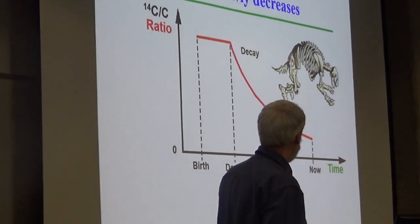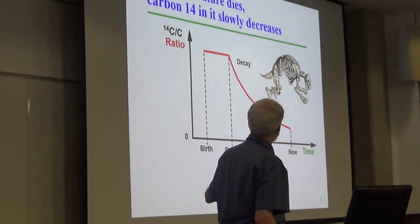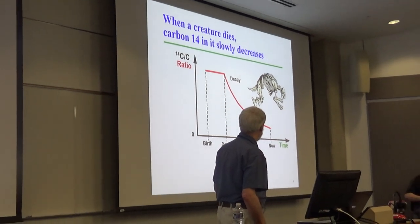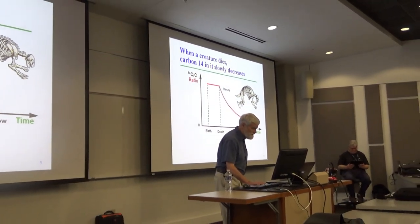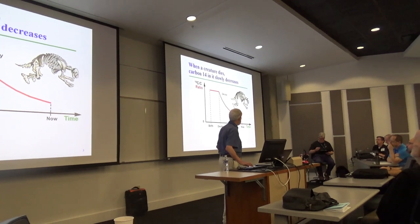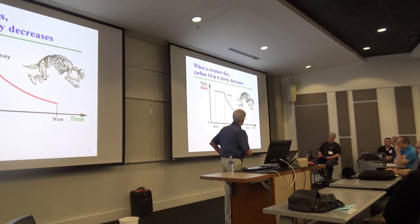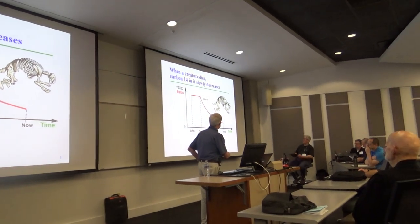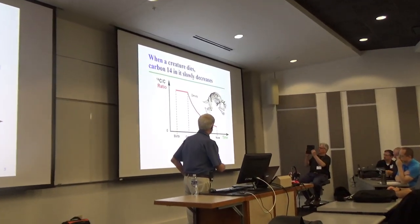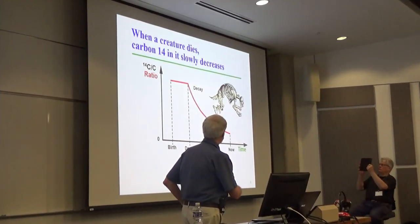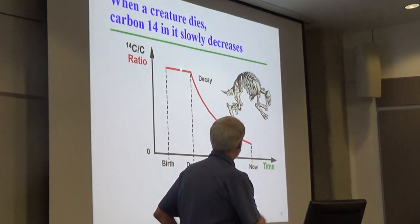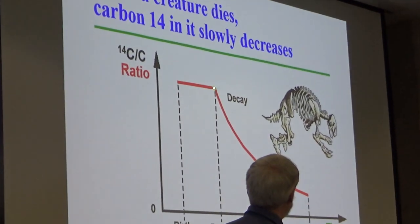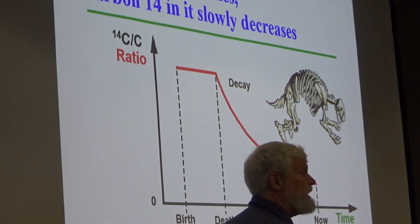So I'm going to show the decay here, so birth, death, now, carbon-14 ratio versus time. We can use carbon-14 to calculate, if we see this much carbon-14 in the creature today, and if you extrapolate back to a known level, whatever level it had when it was alive, then we can get the time of its death.